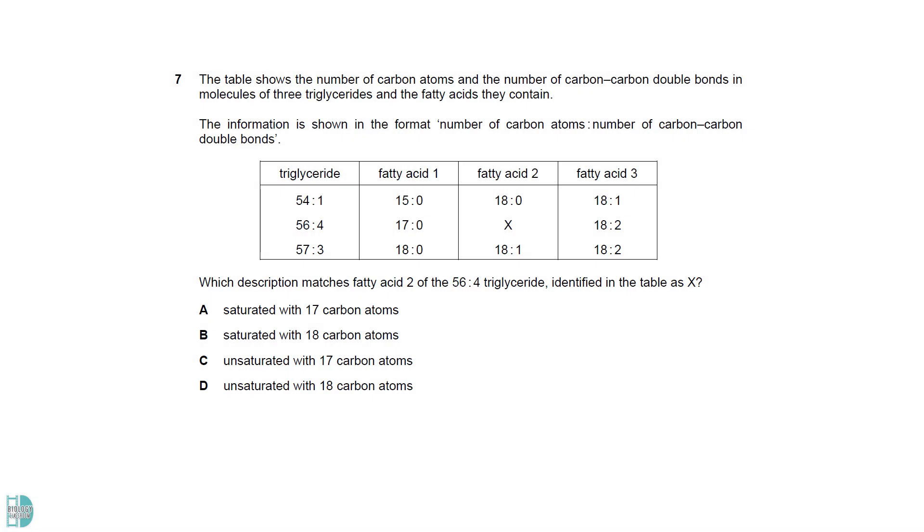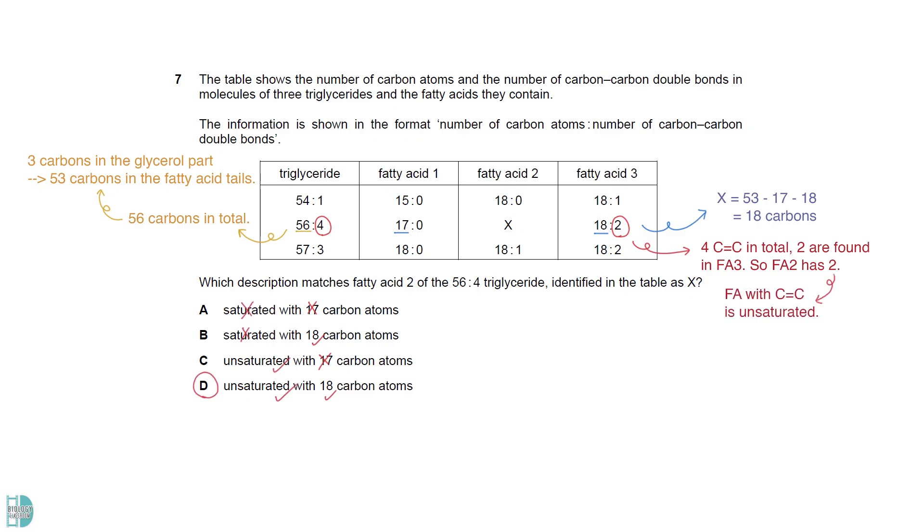These triglycerides contain a total of 56 carbon atoms. Minus out the 3 carbons in the glycerol part, we are left with 53 carbons in the fatty acid tails. Since 1 and 3 have 17 and 18 carbon atoms, 2 is an 18 carbon fatty acid. There are 4 carbon-carbon double bonds. 2 are found in fatty acid 3, so fatty acid 2 has 2. Fatty acids with carbon-carbon double bonds are said to be unsaturated.